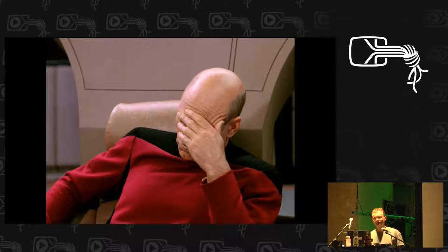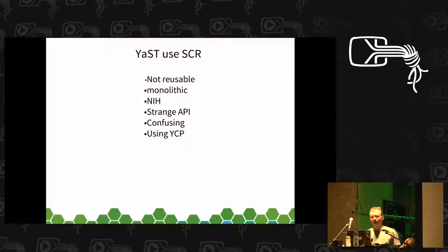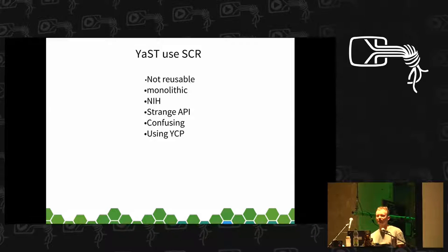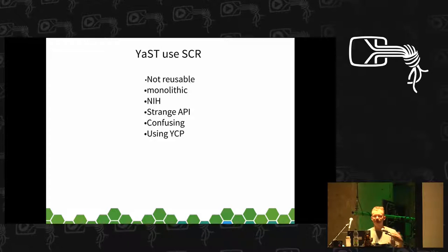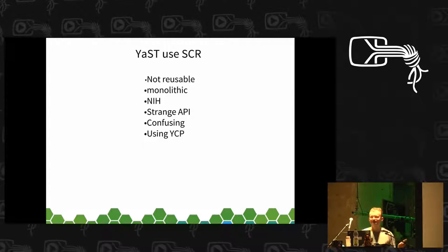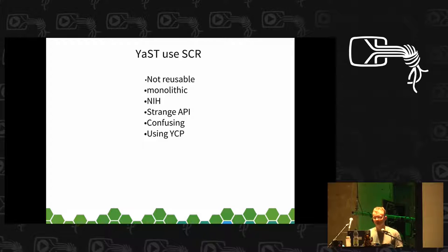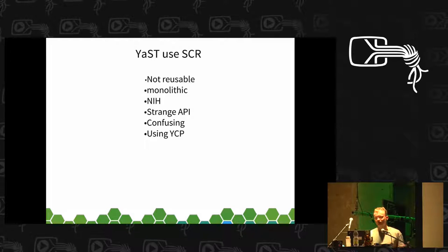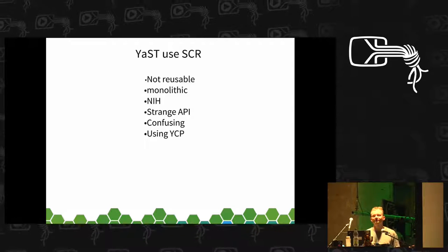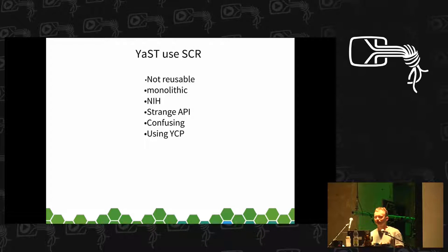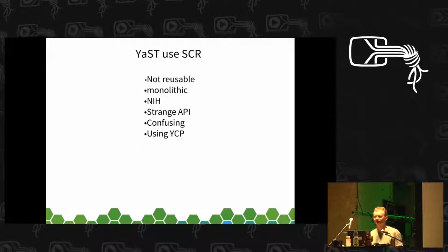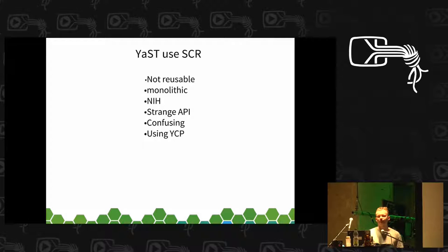Currently, I will mostly talk about YAST, because YAST even now still uses some old API for these changes. It's called SCR. I don't even know what it actually means — it's a very old acronym. The problem is it's not very reusable; it can only be used in YAST. Even if some projects have motivation to reuse it, in the end they just give up, because it's too tightly coupled with the rest of YAST.